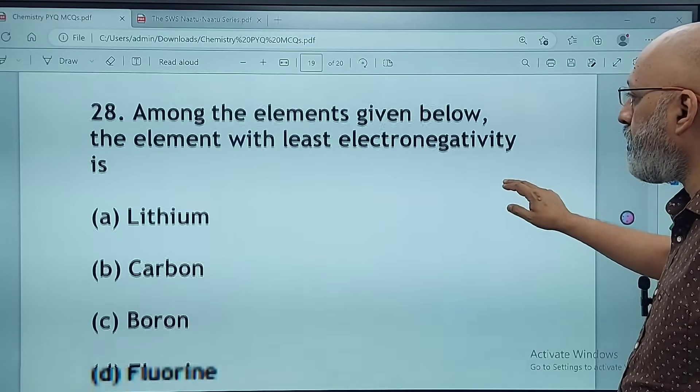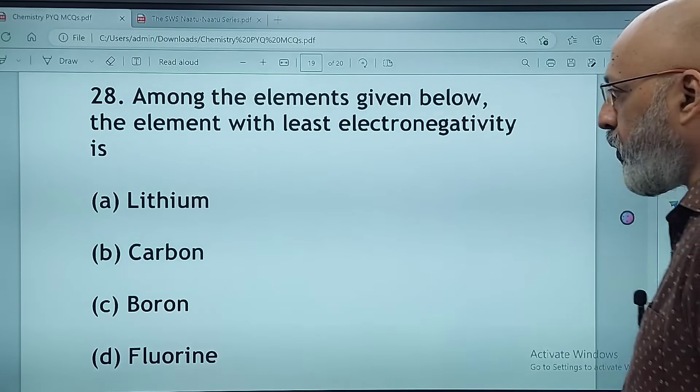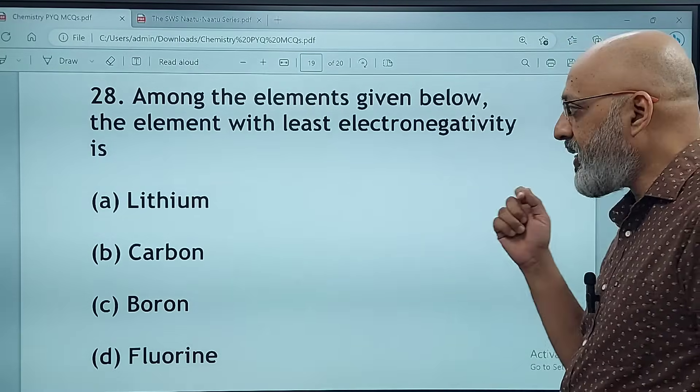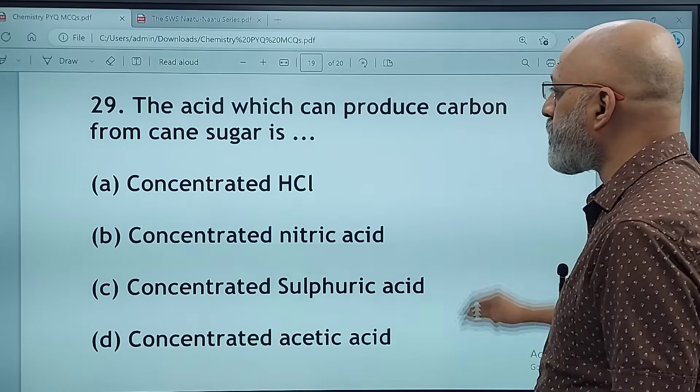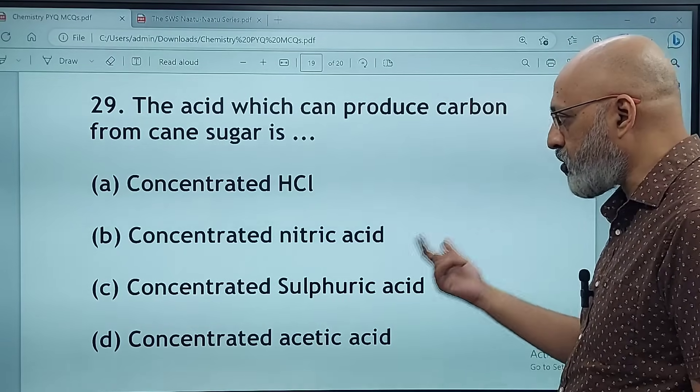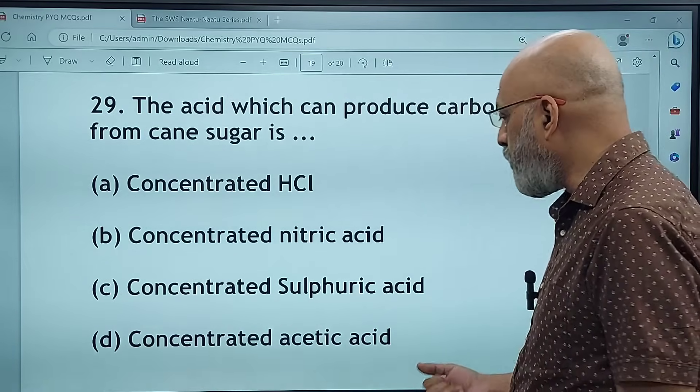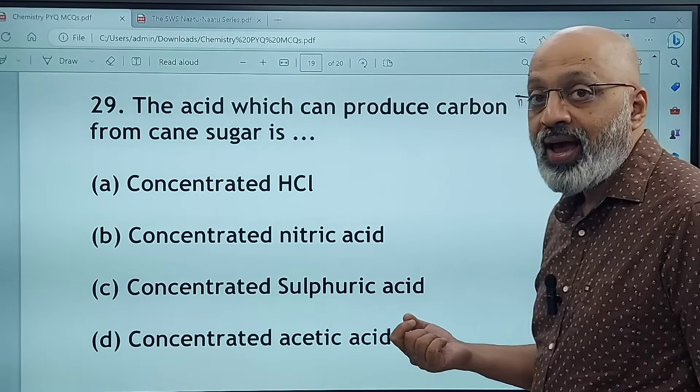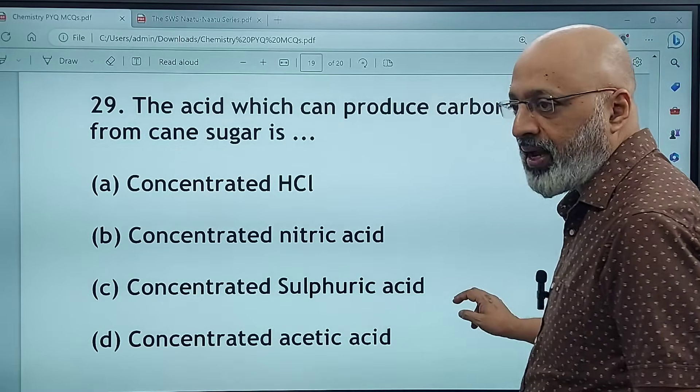Among the elements given, the element with least electronegativity is lithium, carbon, boron, or fluorine. The correct answer is lithium. The acid which can produce carbon from cane sugar is concentrated HCl, concentrated nitric acid, concentrated sulfuric acid, or concentrated acetic acid. The correct answer is C, concentrated sulfuric acid.